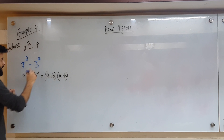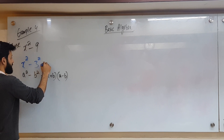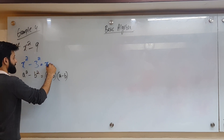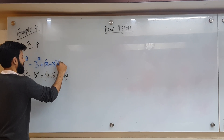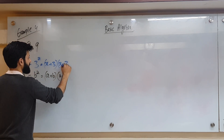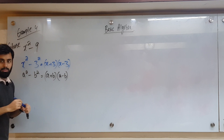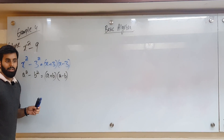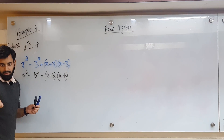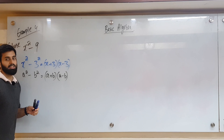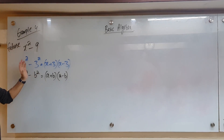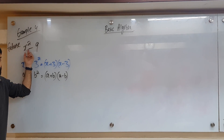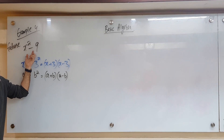It becomes a plus b into a minus b. So what will this become? x plus 3 into x minus 3. These are the 3 identities — one is plus square, one is minus square, and the third identity is the difference of squares. When we apply it, when you see two perfect squares with a minus sign in between — that's it.